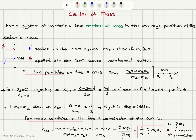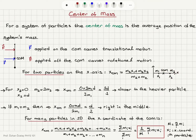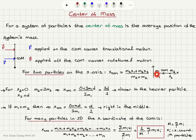So how do we find the center of mass? If we look at two particles on the x-axis — one particle has mass m1 located at position x1, another has mass m2 at position x2 — the x-coordinate of the center of mass is m1*x1 plus m2*x2 divided by m1 plus m2, where x1 and x2 are the distances from the origin to the positions of these particles.